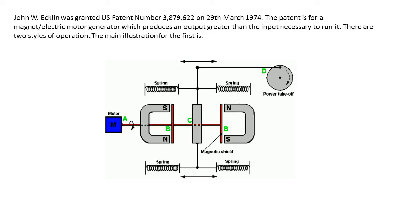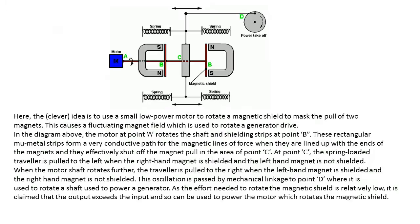There are two styles of operation. The main illustration for the first is here, the clever idea is to use a small low-power motor to rotate a magnetic shield to mask the pull of two magnets. This causes a fluctuating magnet field which is used to rotate a generator drive.